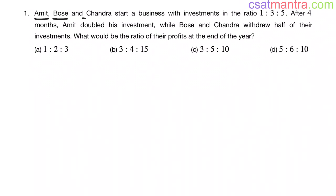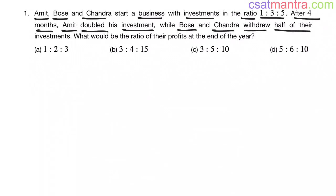Amit, Bose and Chandra start a business with investments in the ratio 1:3:5. After 4 months, Amit doubled his investment, while Bose and Chandra withdrew half of their investments. What would be the ratio of their profits at the end of the year?